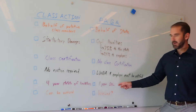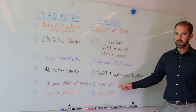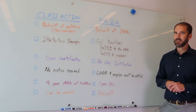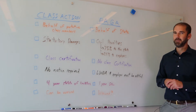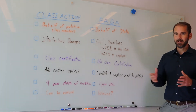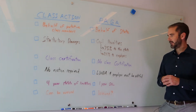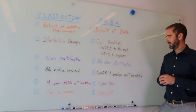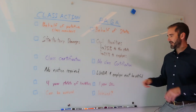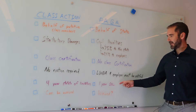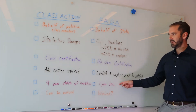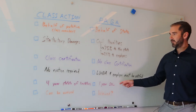PAGA claims can only go back one year because they're only seeking civil penalties. It's a key difference — a much shorter statute of limitations for PAGA claims.